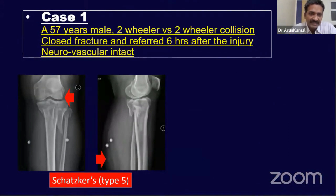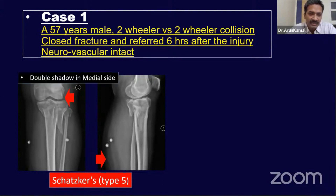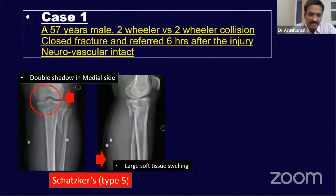My first case example is a 57-year-old male who presented following a road traffic accident with a bichondylar tibial condyle fracture and no neurovascular deficit. On X-ray, there is a double outline on the medial side of the tibial condyle, and one striking feature is extensive soft tissue swelling — this is a case where you need to wait and do proper preoperative planning.